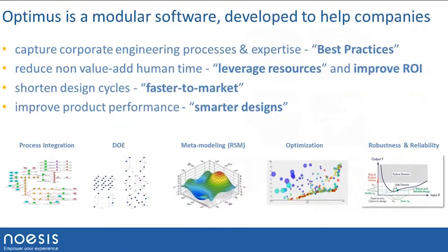The first product is called Optimus. It's a PIDO software — PIDO stands for Process Integration and Design Optimization. Through this PIDO technology, you will be able to capture your corporate engineering knowledge, reduce non-value-added human time, shorten the design cycle, and improve product performance by capturing the process and doing smart sampling and optimization in the design space.